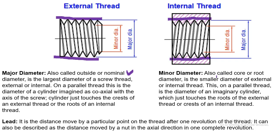The minor diameter, also called core or root diameter, is the smaller diameter of the external or internal thread. For external thread, it connects the roots. For internal thread, the smaller diameter connects the crests.